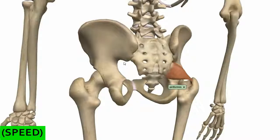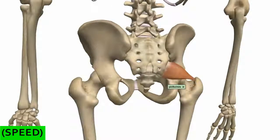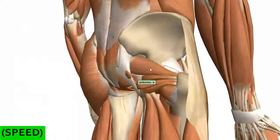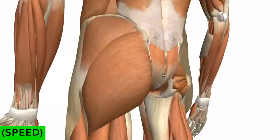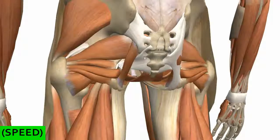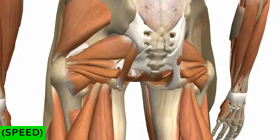Above the sacrospinous ligament you've got the greater sciatic foramen. There's also another ligament lying posteriorly, called the sacrotuberous ligament, which is oriented more vertically. The greater sciatic foramen is the space between the greater sciatic notch and the sacrospinous and sacrotuberous ligaments. The sacrospinous ligament runs horizontally from the ischial spine to the sacrum, and the sacrotuberous ligament runs vertically from the ischial tuberosity to the sacrum.